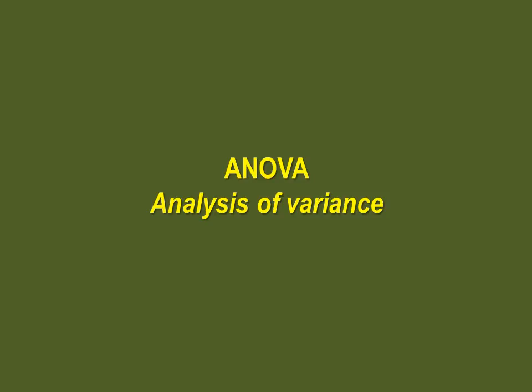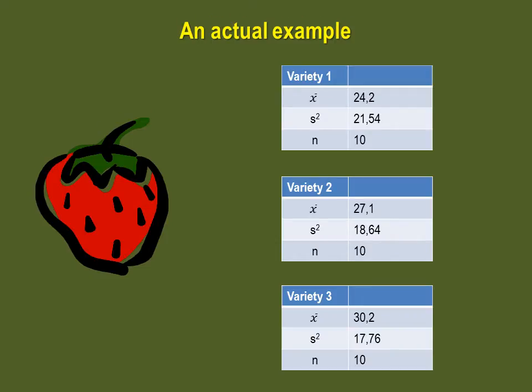We'll continue our exploration of the ANOVA technique by doing a full example. Say you are looking to grow strawberries over the summer and you want to select the variety that will give you on average the most berries per plant.